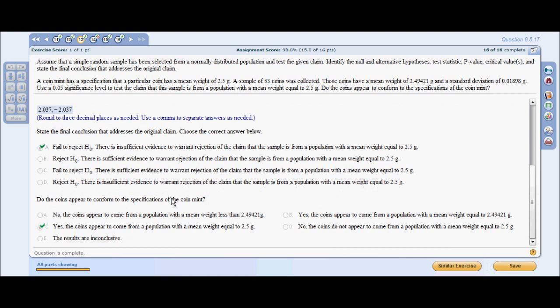You are taught never to think of fail to reject as accepting the null, but for purposes of understanding and getting your work done, it's fine to think accept, just don't admit it to others. For this particular problem, we can accept that H sub-zero and fail to reject for insufficient evidence as StatDisk has suggested.